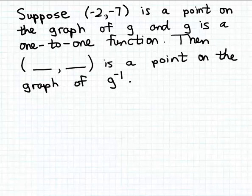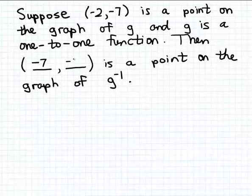So if the point (-2, -7) is on the graph of the function g, then if we interchange the input and output coordinates in this point, that point is going to be on the graph of the inverse function. So we know that (-7, -2), the point we get by interchanging these two coordinates, is going to be a point on the graph of the inverse function, labeled as g inverse or g with the superscript of minus one.